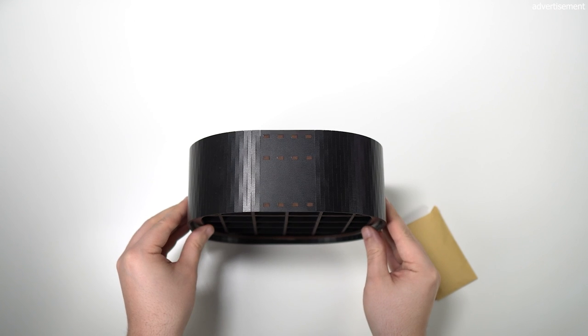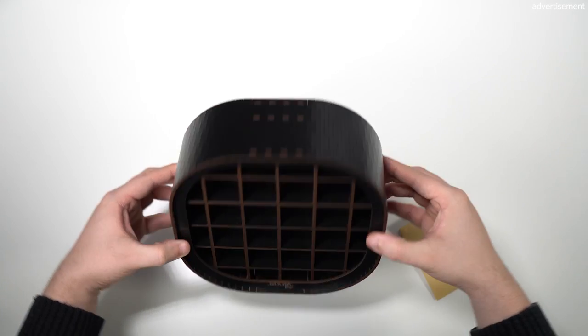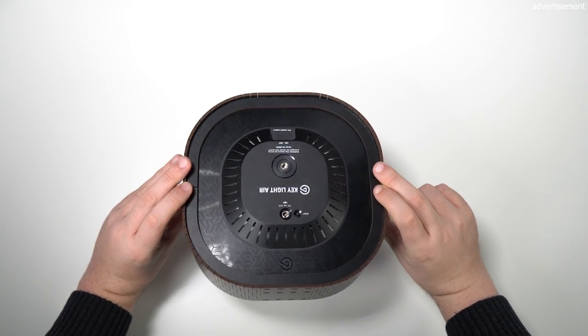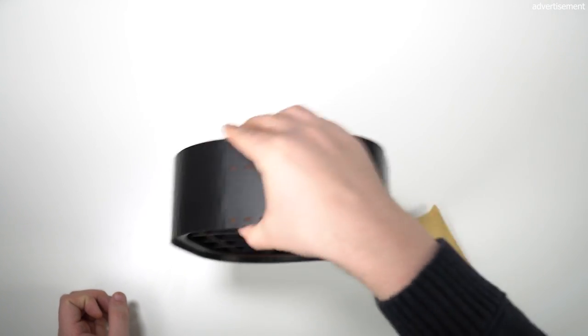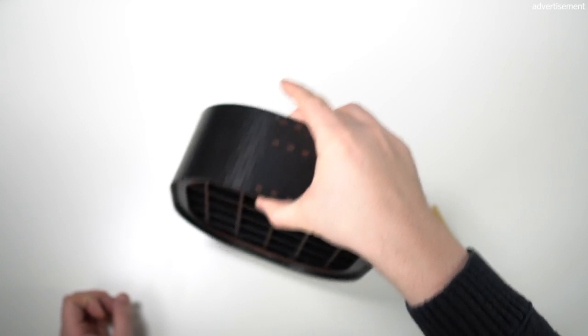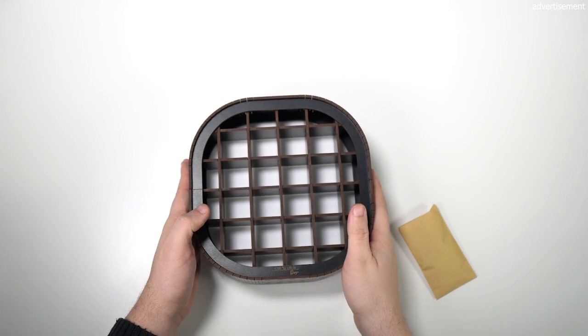Once everything is locked in place we can take a look at the whole thing from the front. Very clean, fits perfectly and all connectors, vents and threads are still accessible from the back. The entire attachment is also very secure so you can even slam your controller on the table out of frustration when you lose a FIFA match without anything falling off.